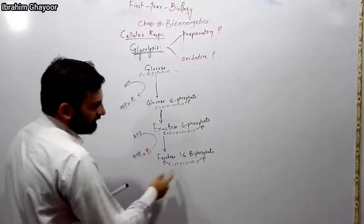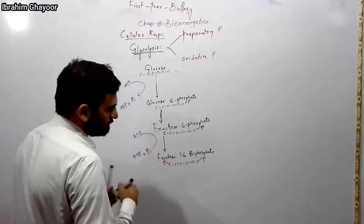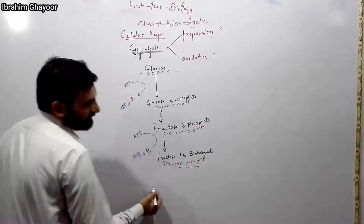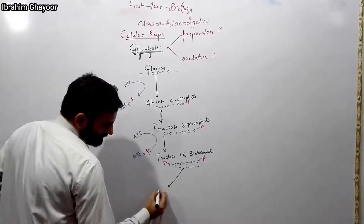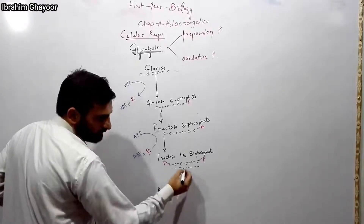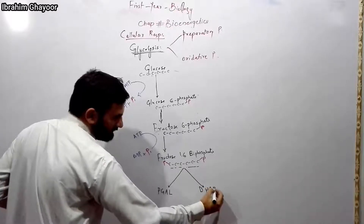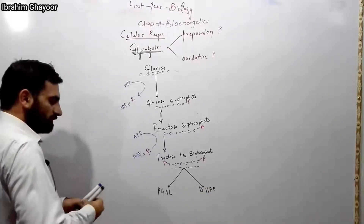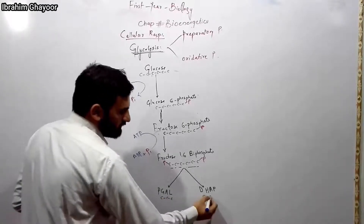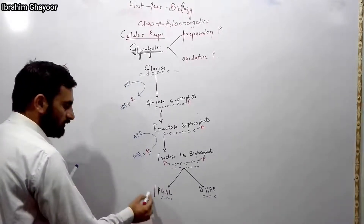A cleavage reaction occurs. Fructose-1,6-bisphosphate undergoes cleavage, splitting into two 3-carbon compounds: phosphoglyceraldehyde (PGAL) and dihydroxyacetone phosphate (DHAP). Both are three-carbon compounds.